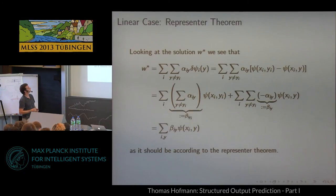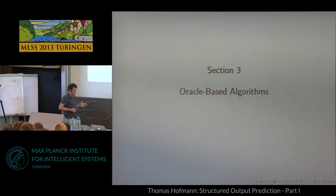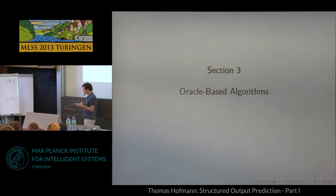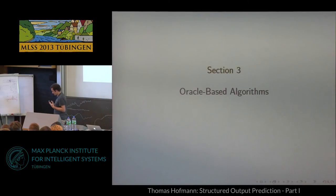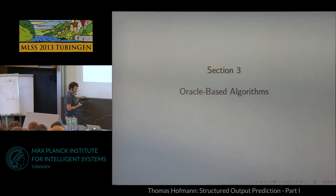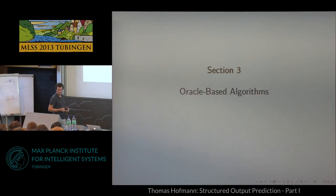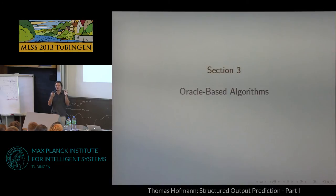To summarize what we've done so far: I've explained how to build feature representations extracting features from input-output pairs jointly; why a loss function is important and how to incorporate it; how to generalize the margin from the standard SVM to the structured case; and how we get a similar quadratic program with margin constraints, as well as the dual and a representer theorem. It's basically taking the SVM approach and seeing how to generalize it naturally.